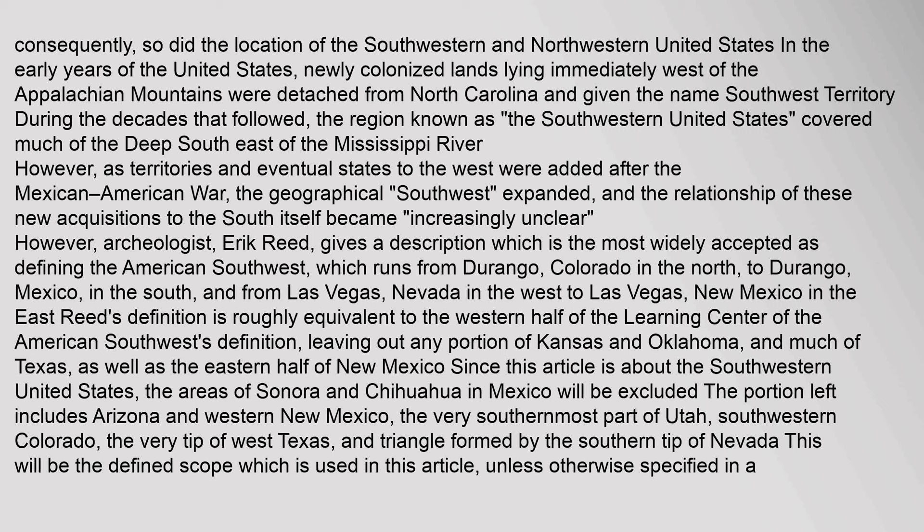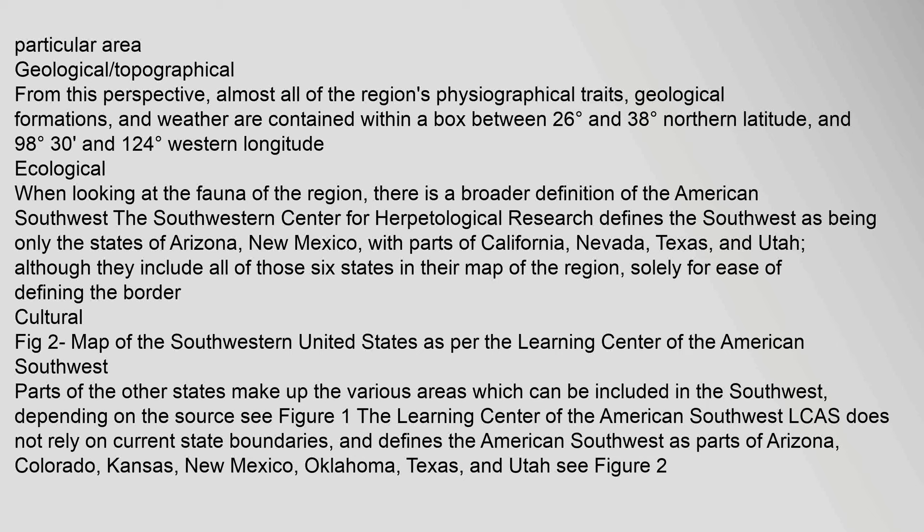From a geological and topographical perspective, almost all of the region's physiographical traits, geological formations, and weather are contained within a box between 26 degrees and 38 degrees northern latitude, and 98 degrees 30 and 124 degrees western longitude. When looking at the fauna of the region, there is a broader definition of the American Southwest. The Southwestern Center for Herpetological Research defines the Southwest as being only the states of Arizona and New Mexico, with parts of California, Nevada, Texas, and Utah, although they include all of those six states in their map of the region.